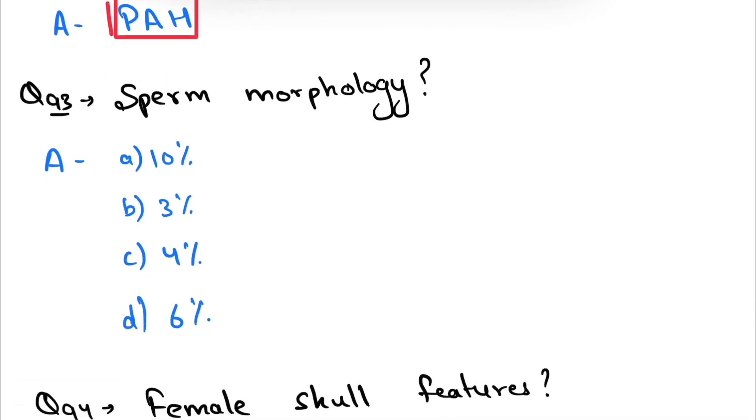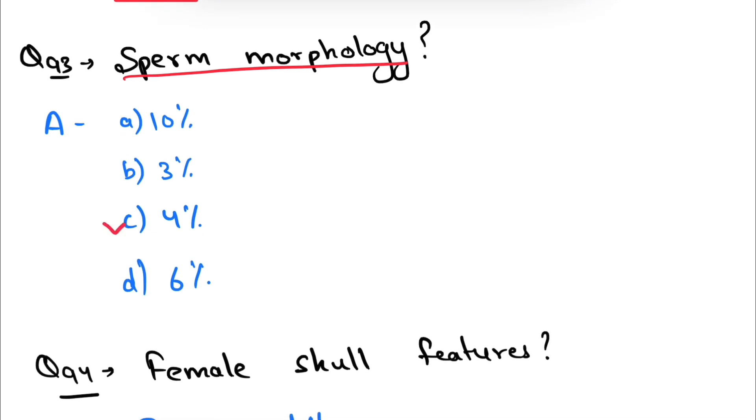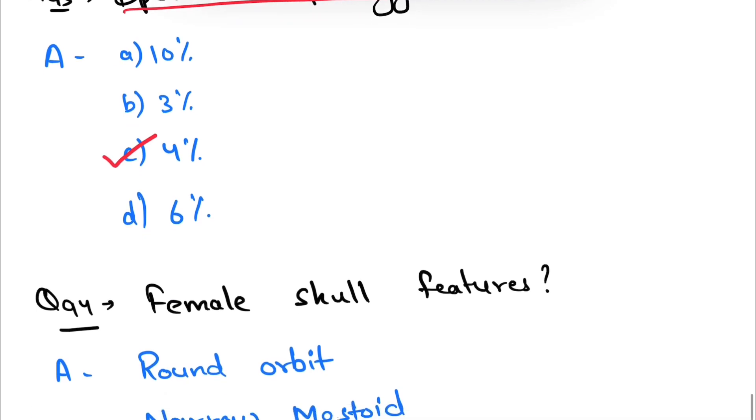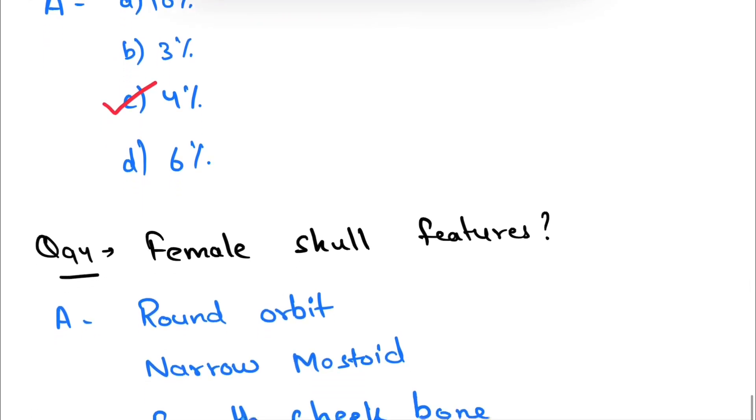Question number 93: sperm morphology. Normal sperm morphology percentage was asked. This is 4% minimum. Normal morphological sperm should be present in the semen.